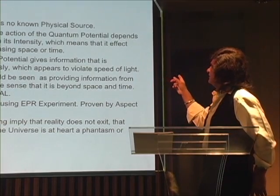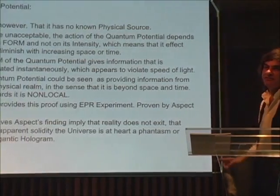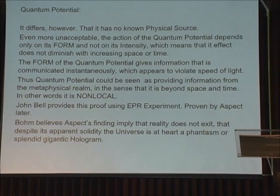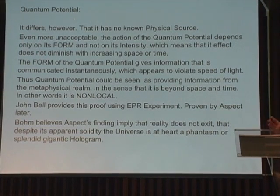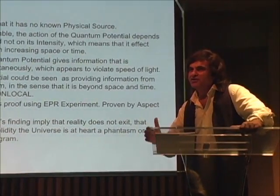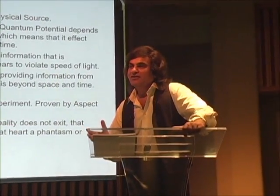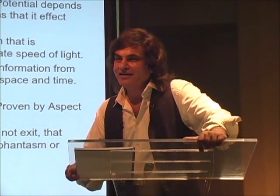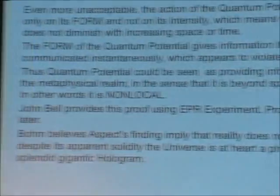The form of the quantum potential gives information that is communicated instantaneously, which appears to violate the speed of light. So this quantum potential gives information instantaneously — yet Einstein says you cannot travel more than the speed of light. Thanks to John Bell, who confirmed there is instantaneous communication. As one audience member noted, there's no amplitude here and it is hyperluminal — instantaneous. That's where non-locality comes in, which is what Einstein was not happy about — action at a distance, spookiness.